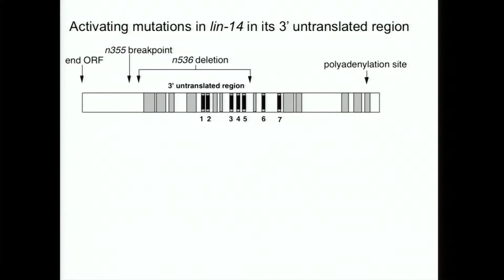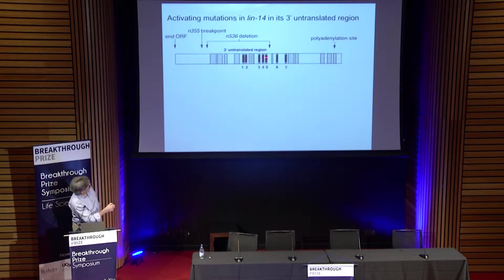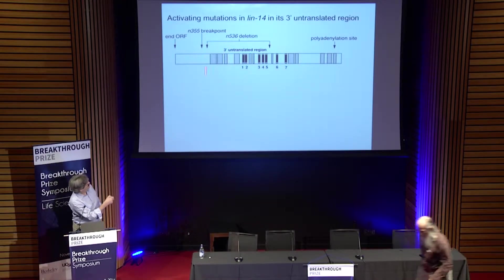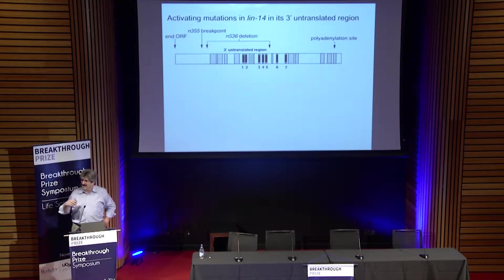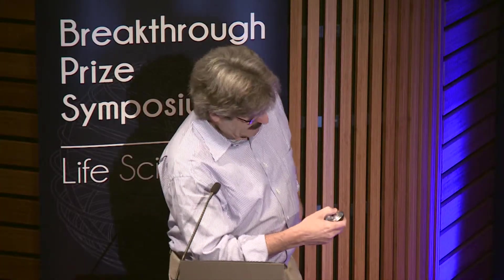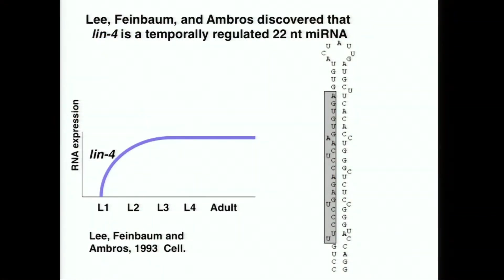The first hint of what we were working on was that in the LIN-14 gene, the gain-of-function activating mutations — which made the gene more active than wild-type — were deletions in the three-prime untranslated region, or a translocation that completely lopped off that 3' UTR. That said there's some kind of off-switch or dial turning down the juice on this gene, and if you lose that, the gene becomes hyperactive. The second hint came from Victor Ambros's lab, where Candy Lee and Rosalind Feinbaum figured out that the LIN-4 gene encodes a very tiny RNA — the mature 22-nucleotide RNA and its precursor — that builds up over time and acts as a switch gene.